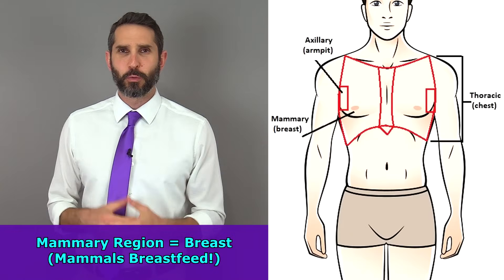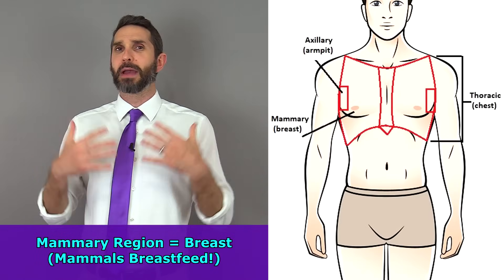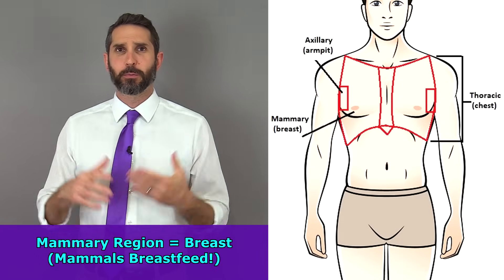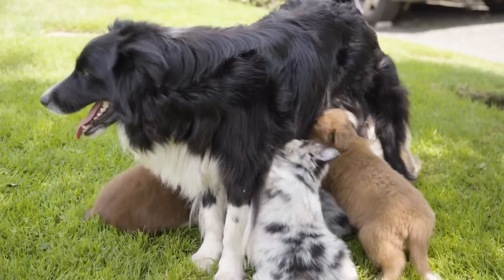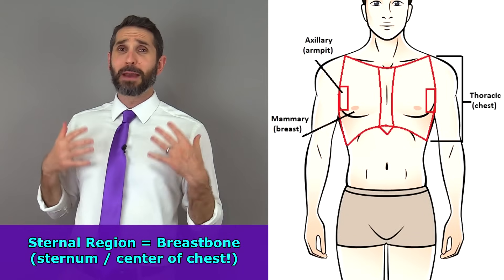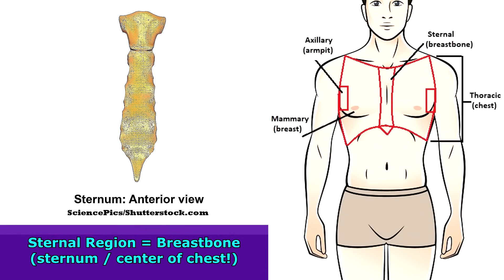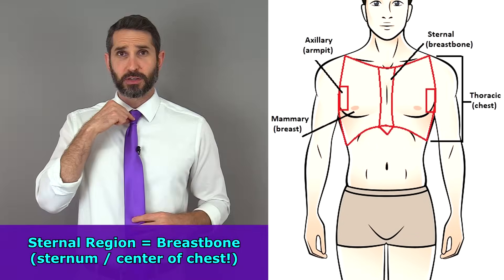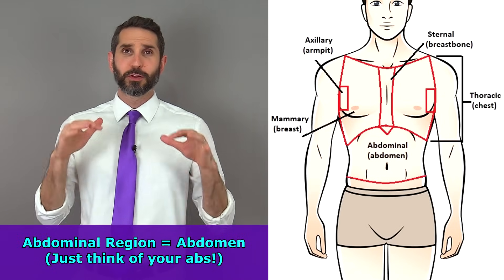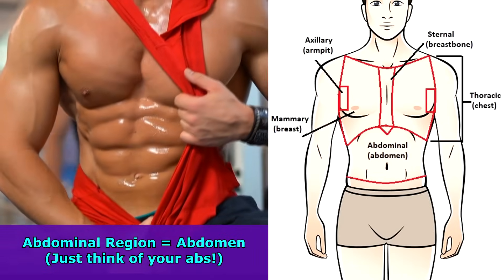The mammary region refers to the breast region, where we have mammary glands. In females they become active after pregnancy and can produce milk — which is where we get the name 'mammals,' because we breastfeed our young. In between the mammary region, you have the sternal region, named after the sternum bone, which looks a lot like a necktie. Moving down, we have the abdominal region — most of you know where your abs are, so this should be easy to remember.